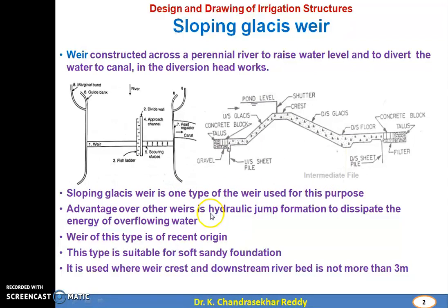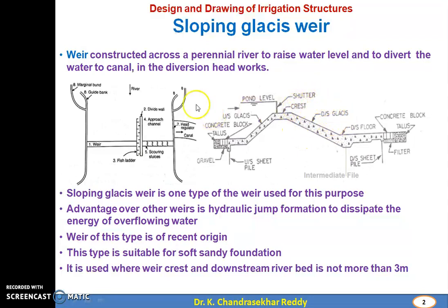The advantage of the sloping glacis weir over other weirs is the formation of a hydraulic jump, which dissipates the energy of overflowing water. This type of weir is of recent origin, suitable for soft and sandy foundations, and is used where the weir crest and downstream river bed difference is not more than 3 meters.